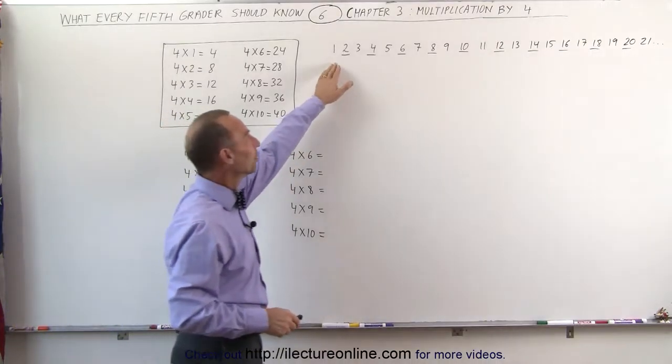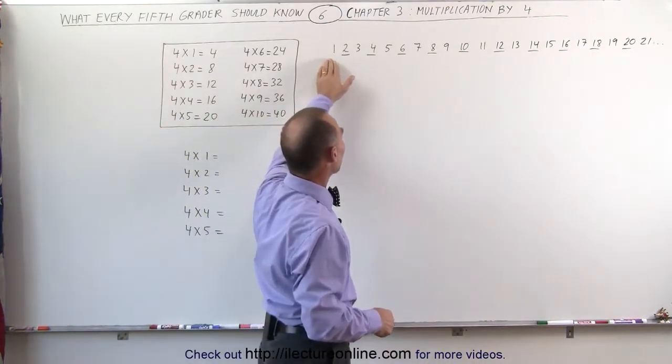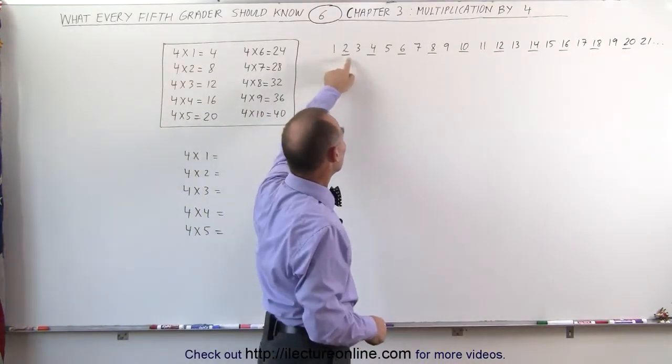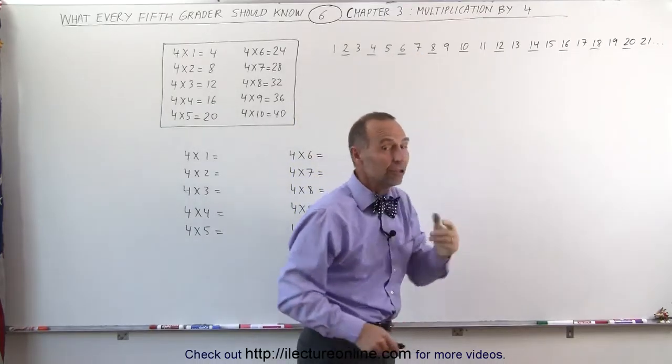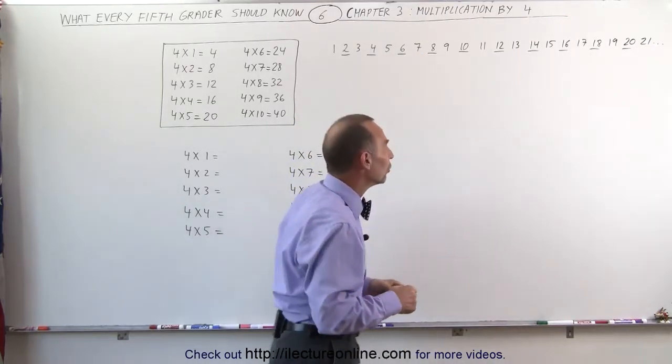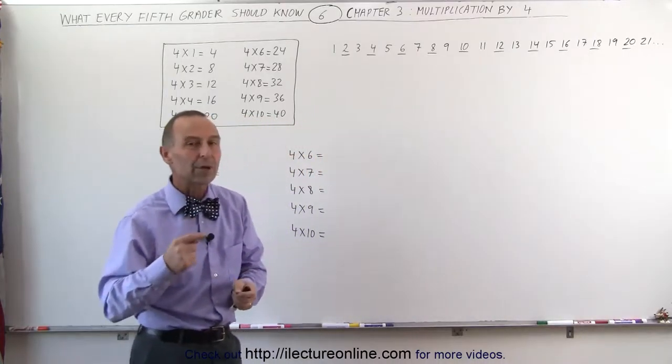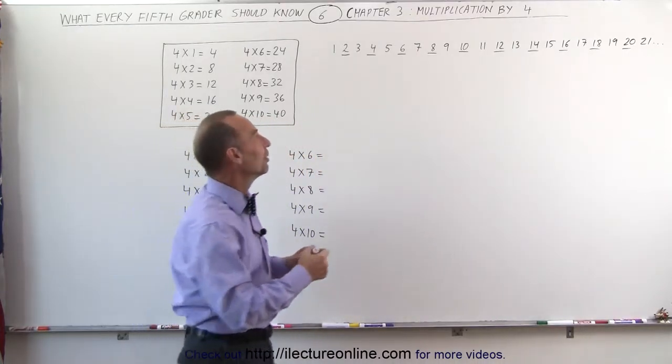If we go back to the number line here, the numbers from 1 to infinity, notice we have every other number is an even number. That was the numbers we used for multiplying times 2. So when we multiply times 4, we grab every other even number.